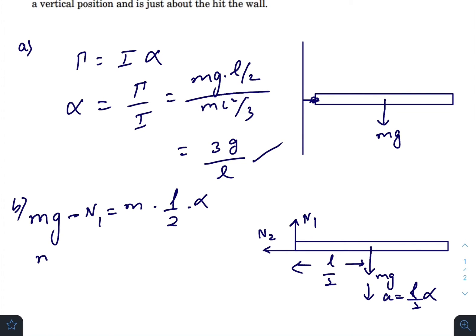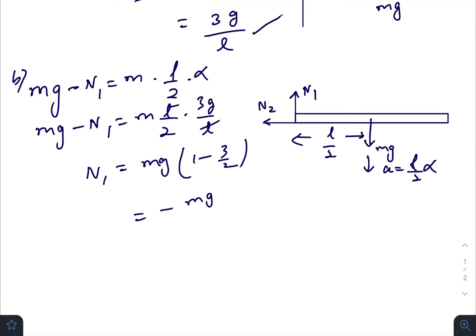So mg minus N1 equals m times L by 2 times 3g divided by L. It gives you N1 equals mg times 1 minus 3 by 2, so that gives you negative mg by 2.